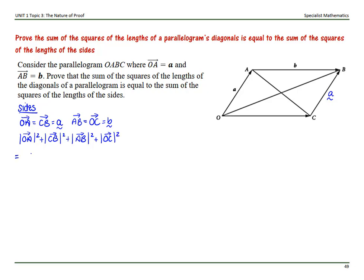Substituting, that's |a|² + |a|² + |b|² + |b|², giving us two lots of |a|² plus two lots of |b|², which equals 2|a|² + 2|b|².